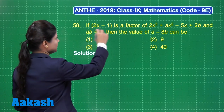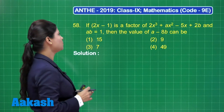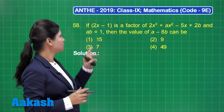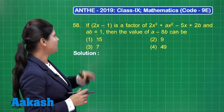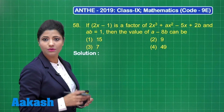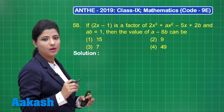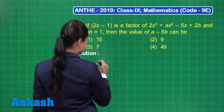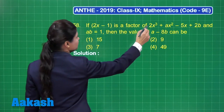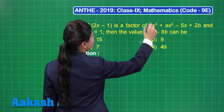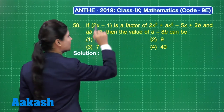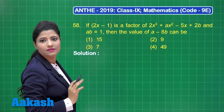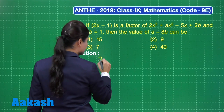Given that 2x minus 1 is a factor of this polynomial, if you equate 2x minus 1 to 0, you get x as 1 upon 2. If it is a factor and you substitute x as 1 upon 2, the value of this polynomial will be equal to 0.